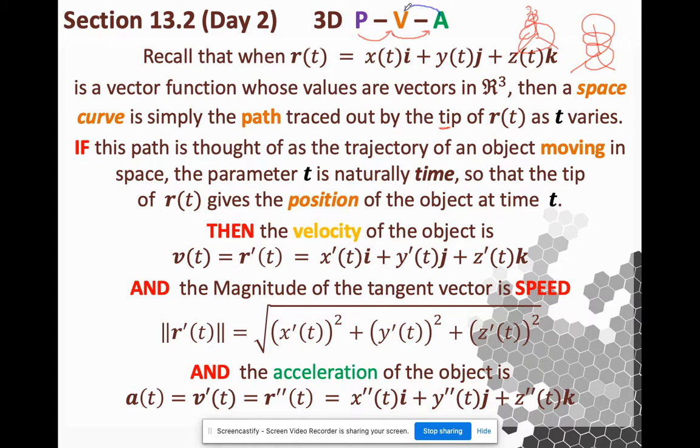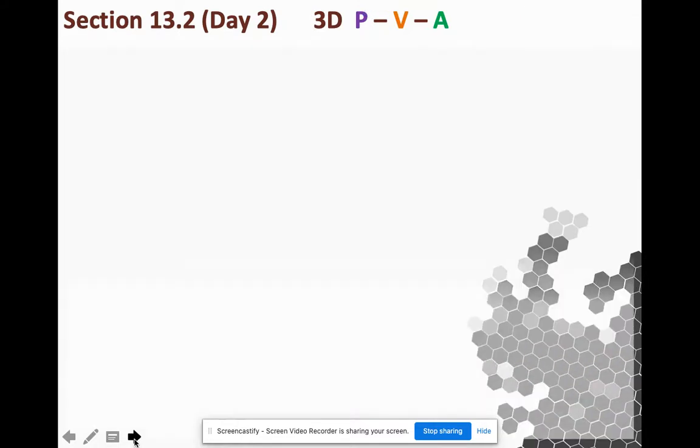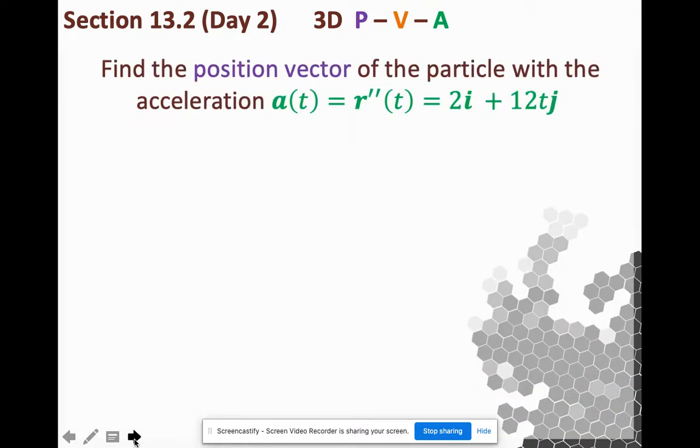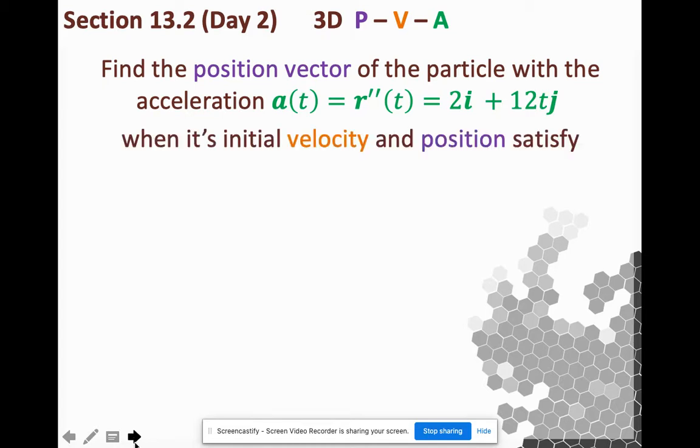So, knowing acceleration, can you get velocity, and from velocity, get me position? So, what if I ask you for the position vector of a particle given acceleration? So, you have to recognize that given acceleration means I've given you the second derivative. But I need some more information, don't I? Its initial velocity and position satisfy these conditions at time what? Yeah, time zero.